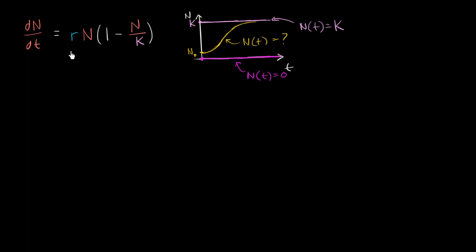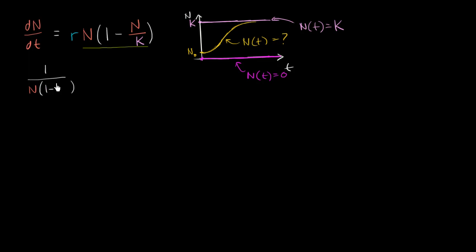To do that, we just have to realize this is a separable differential equation. We're assuming n as a function of t and we're going to solve for an n of t that satisfies this. We just have to separate it from the explicit t's — but there are no explicit t's here, so it's quite easy to do. What I'm going to do is divide both sides by n times (1 minus n over k), and I'll leave the r on the right-hand side to make things a little easier as we try to solve for n of t. So this gives us: 1 over [n times (1 minus n over k)] times dn/dt equals r.